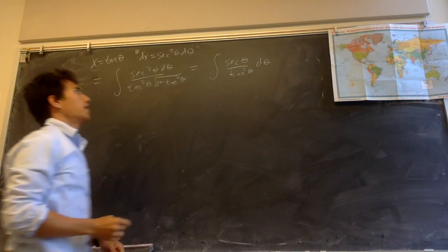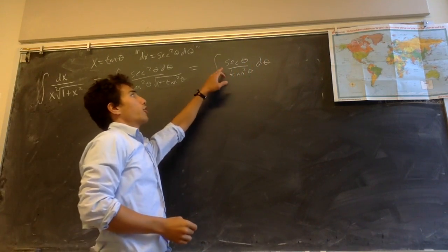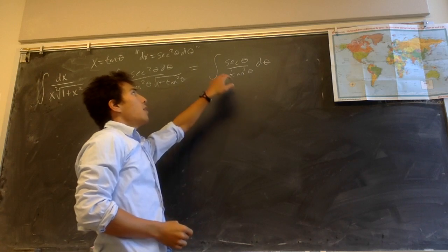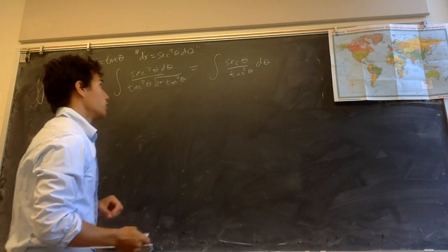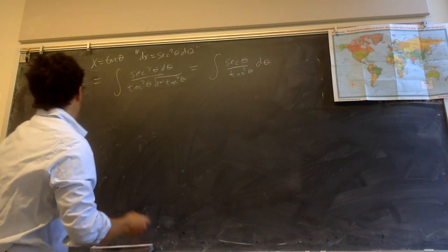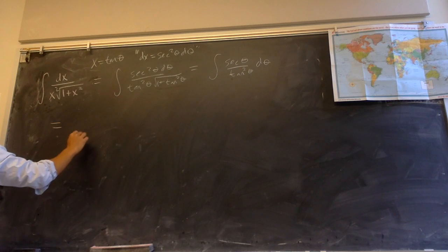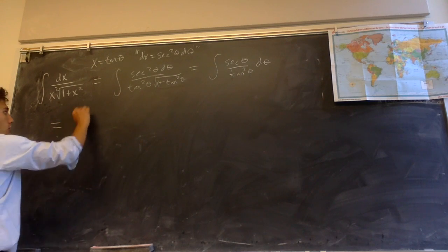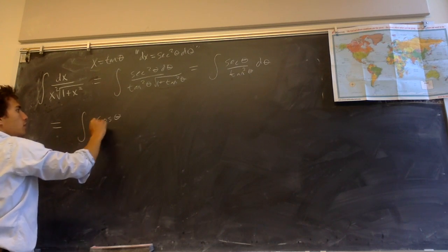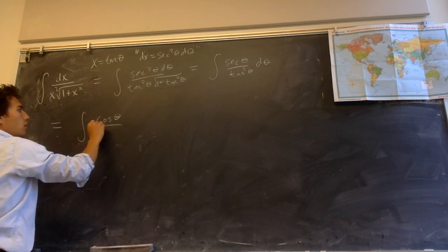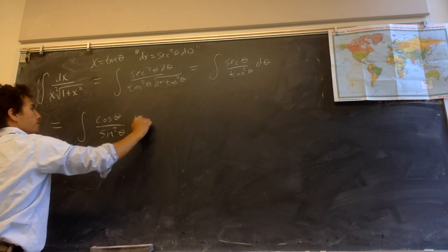We can simplify this more because secant theta is 1 over cosine, and 1 over tangent squared is cosine squared over sine squared. So this integral becomes the integral of cosine theta over sine squared theta d theta.